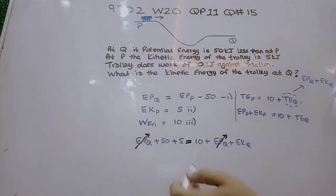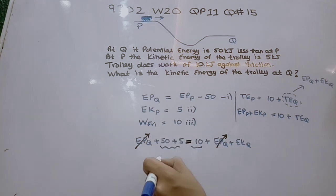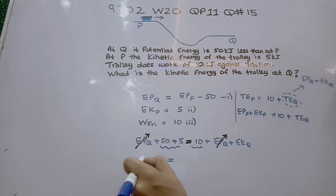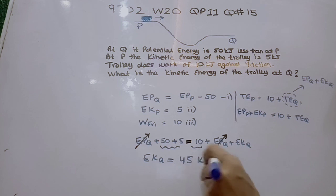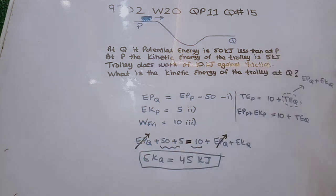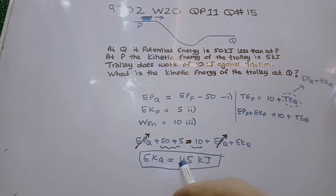So we have 50 plus 5 equals 55, and 55 minus 10 is 45. Therefore, kinetic energy at Q equals 45 kJ. That is our final answer — the kinetic energy of the trolley at Q is 45 kJ. That is it for this video, do like and subscribe for more videos. Thank you.